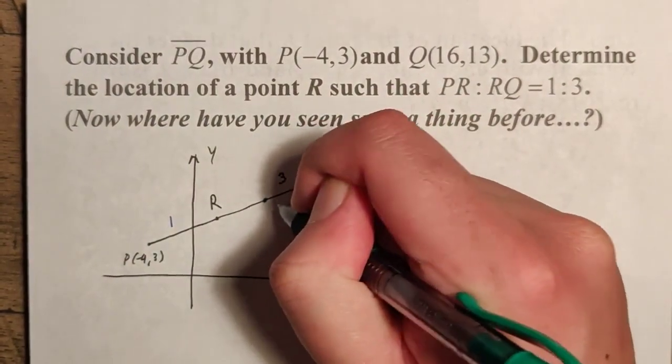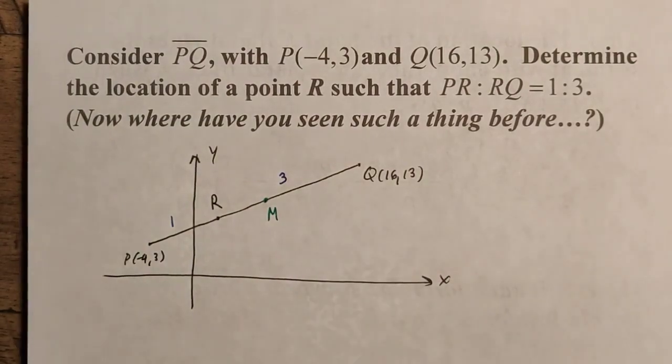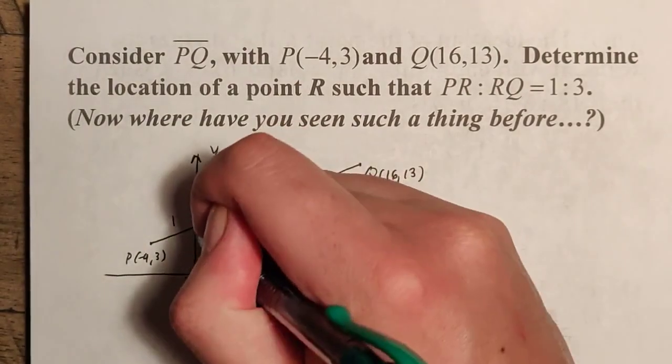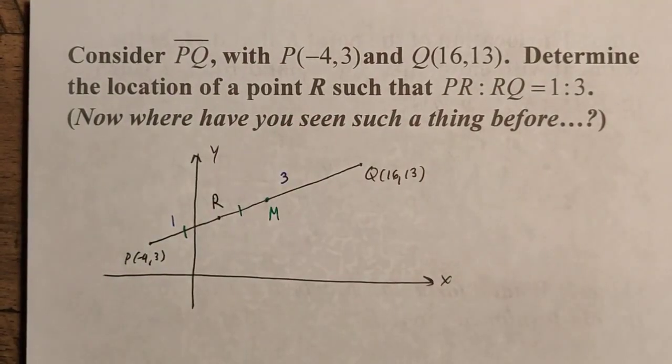So this seems like it's going to be a job for midpoints, because that means if PR is a quarter of the entire segment, then we're going to be looking for midpoints. One strategy we can attempt is to find a midpoint. Let M be the midpoint of PQ, figure that out, and then get R from there because R will be the midpoint of PM.